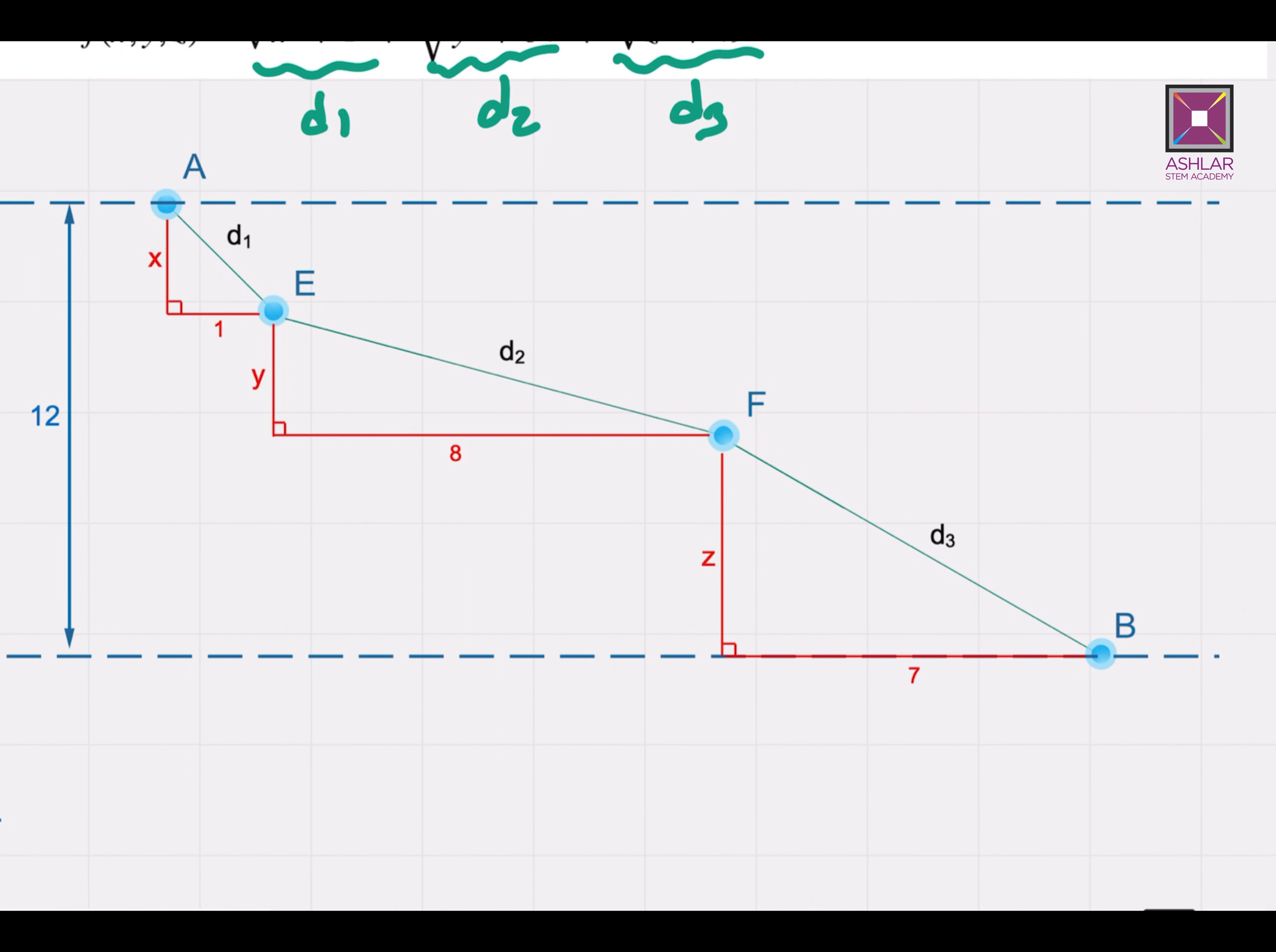So what we see here is, regardless of the values of x, y, z, x plus y plus z is always 12. So this is given in the problem. So the vertical distance between A and B would always be 12.